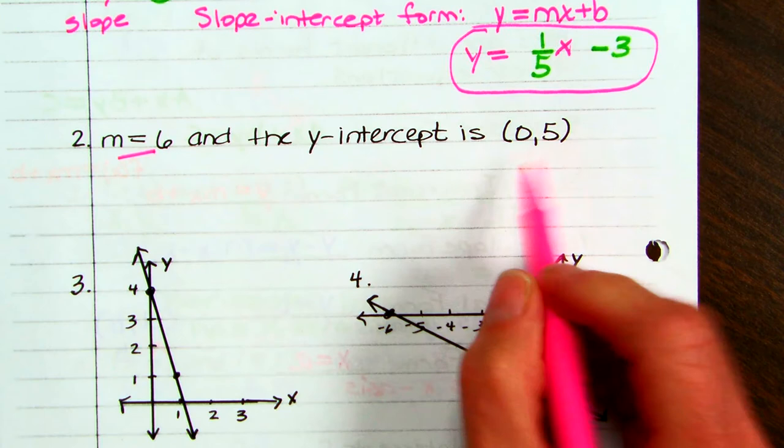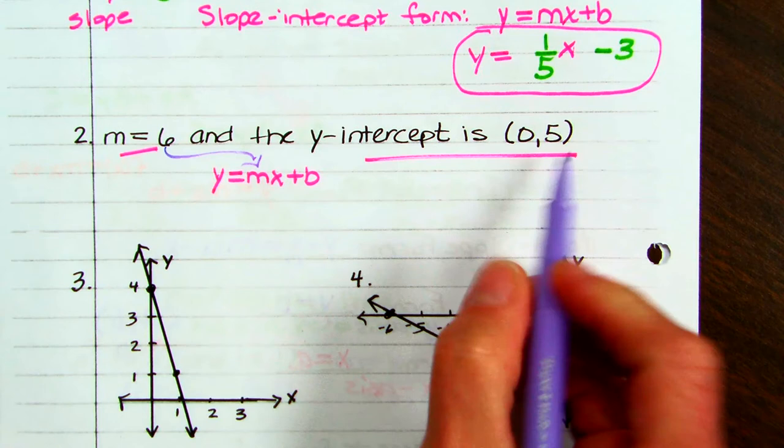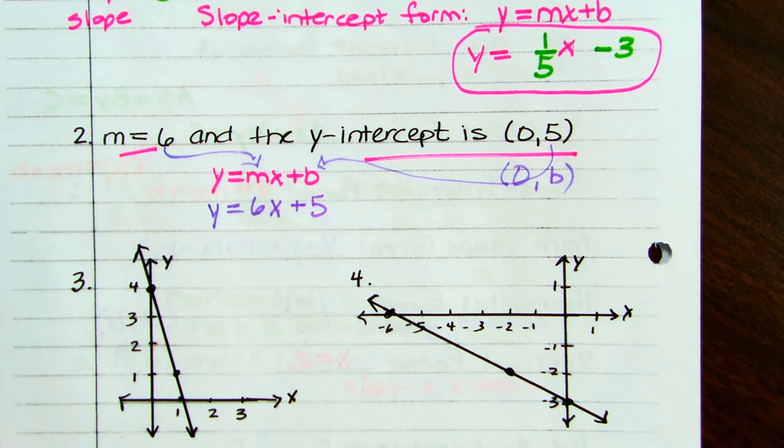For number 2, you have the slope and the y-intercept, so use y = mx + b. If the slope is 6, that goes in place of m. The y-intercept is 5 — this is the point (0, 5) — so you have y = 6x + 5. That's your slope-intercept form.